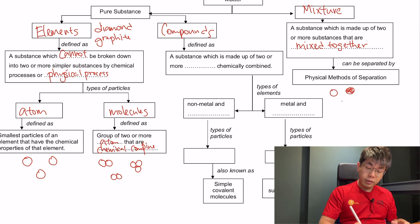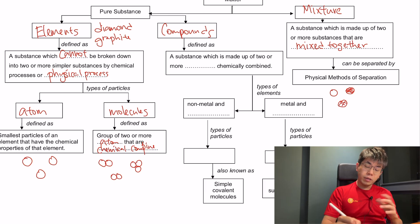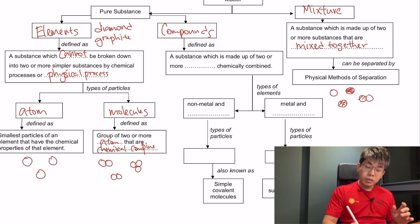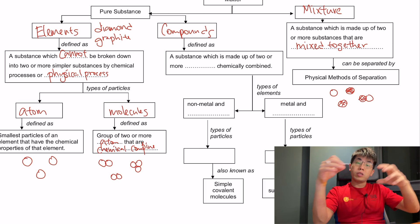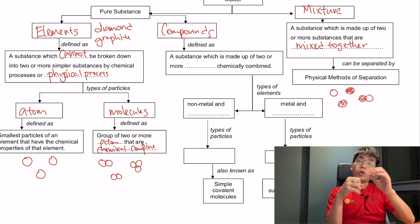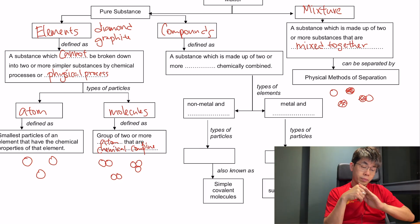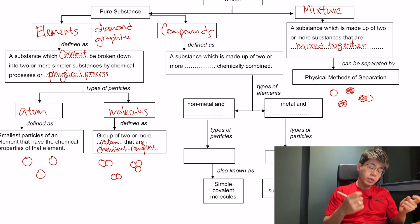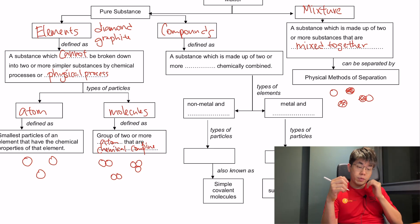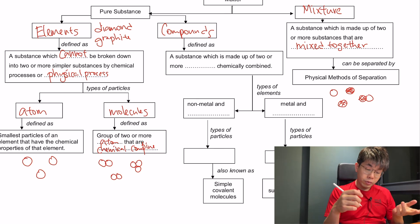If you talk about a mixture, the particles will have different colors — different colors representing different types of atoms — and they are all just mixed together, not joined together. That distinguishes a mixture visually from an element.